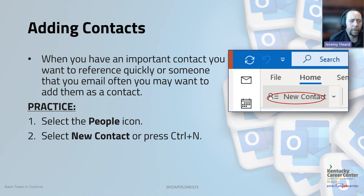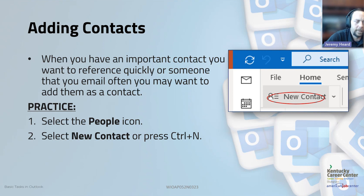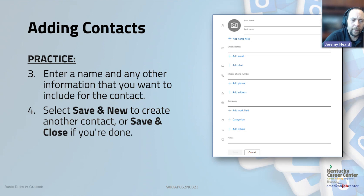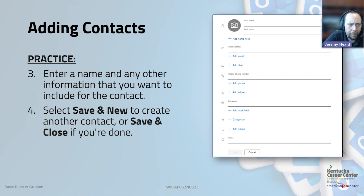You can also add contacts in Outlook. If you work in an organization, your organization's contacts are typically already in there, but you may also want to add personal contacts or contacts outside your organization. To do that, select the People icon and then select New Contact. That opens a form to fill out all kinds of information — at minimum you need a name and email address, but you're welcome to fill out any other details. Once done, you can select Save and New to save the contact and open the form again for another, or Save and Close if that's the only one you needed to add.